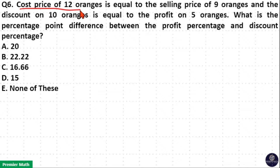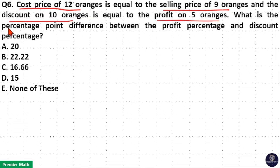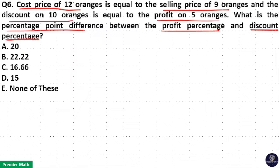Cost price of 12 oranges is equal to sell price of 9 oranges. Discount on 10 oranges is equal to profit on 5 oranges. What is the percentage point difference between profit percentage and discount percentage?